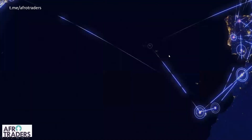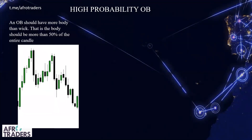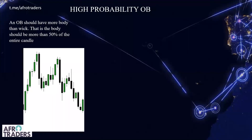Now we dive into the topic: high-probability order blocks. Each one of us has at some point traded an order block that failed. There are reasons why they fail — maybe you were trading the order block against market structure. You have to look at them in the direction of market structure. Also, an order block should have more body than wick. We are interested in order blocks where the body is more than 50 percent of the whole candle. This makes it a high-probability order block.